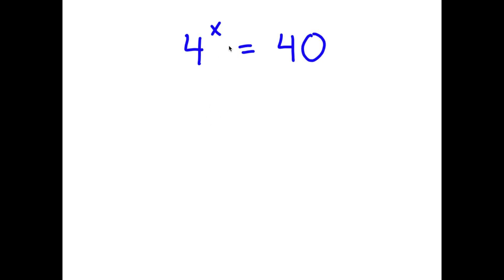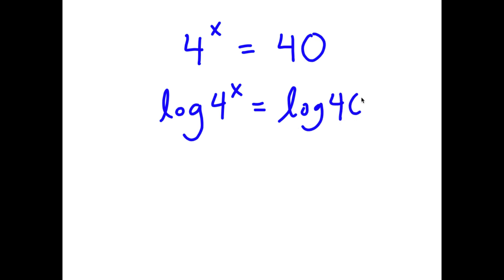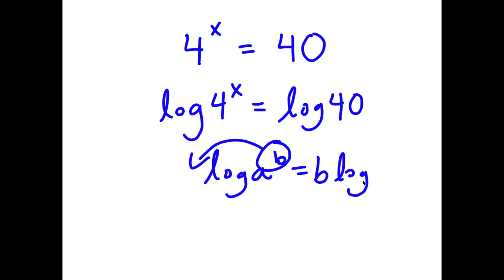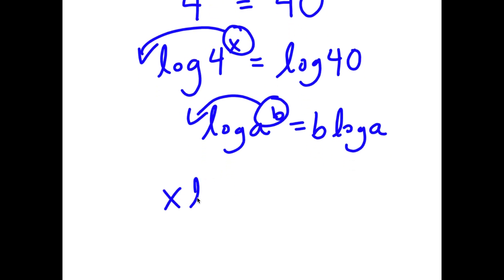In this problem, I have 4 to the power of x is equal to 40. To solve this, I'm going to start by taking the log on both sides. So now I have log of 4 to the power of x is equal to log of 40. If I have something in the form log of a to the power of b, I can move the exponent b to the front. So I move x to the front: x times log 4 is equal to log 40.